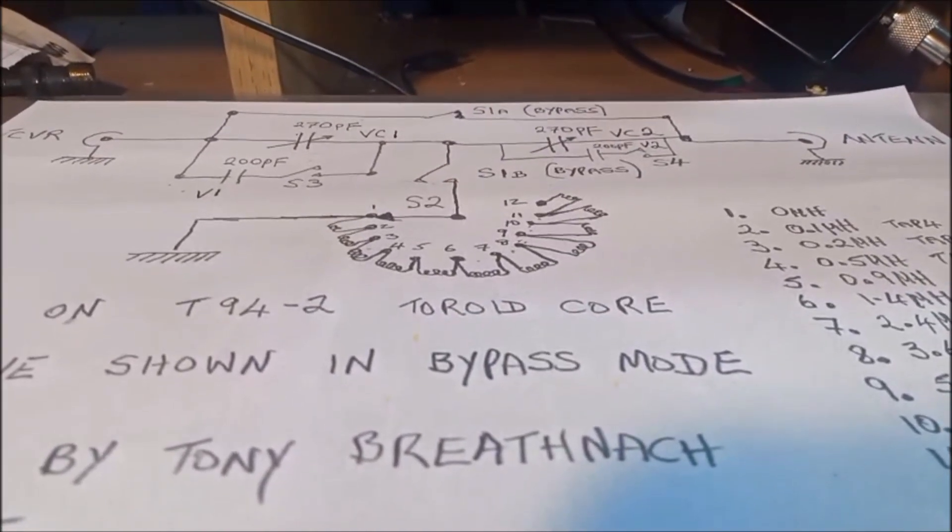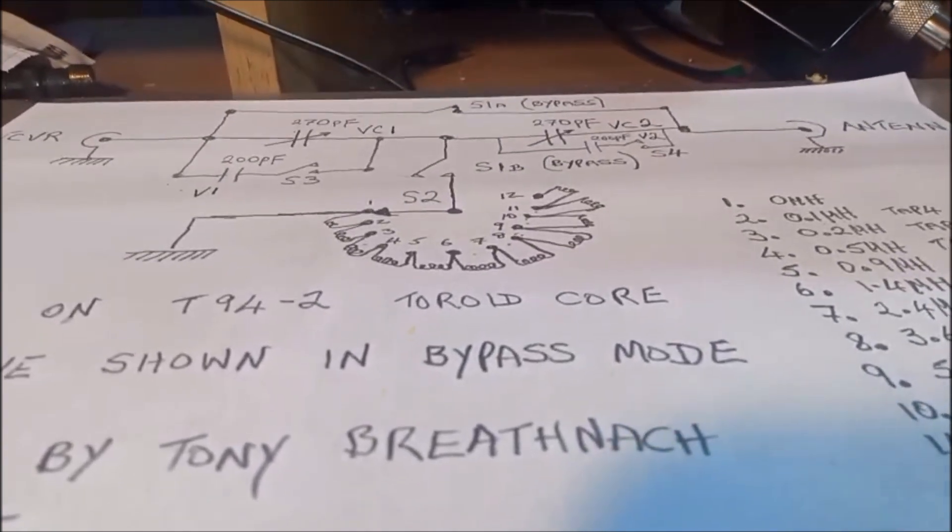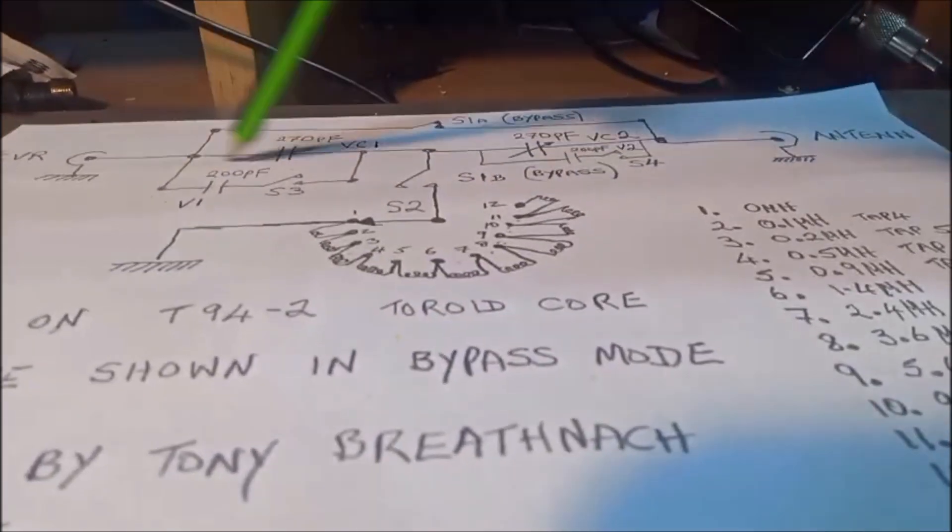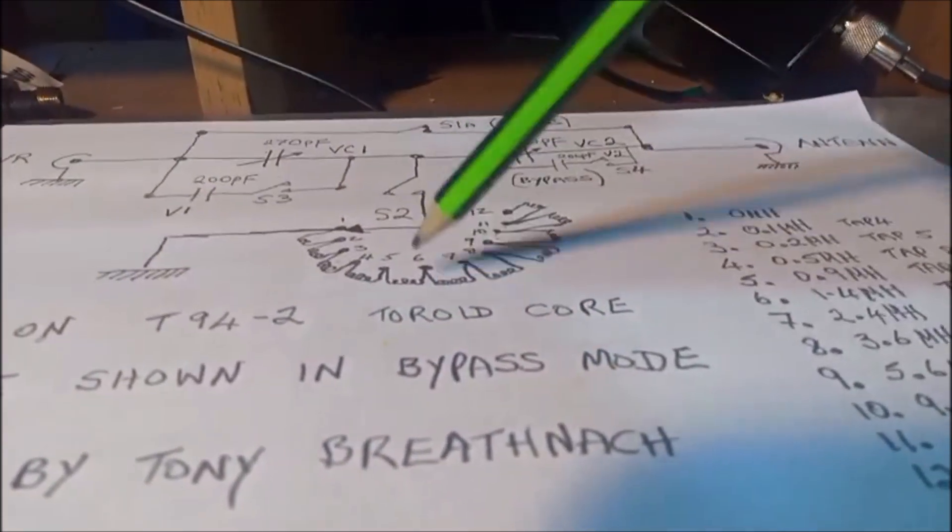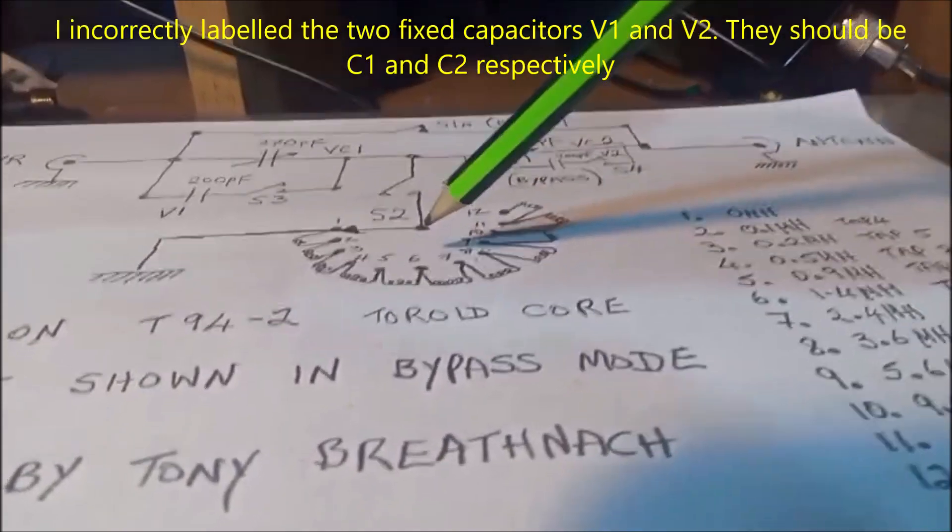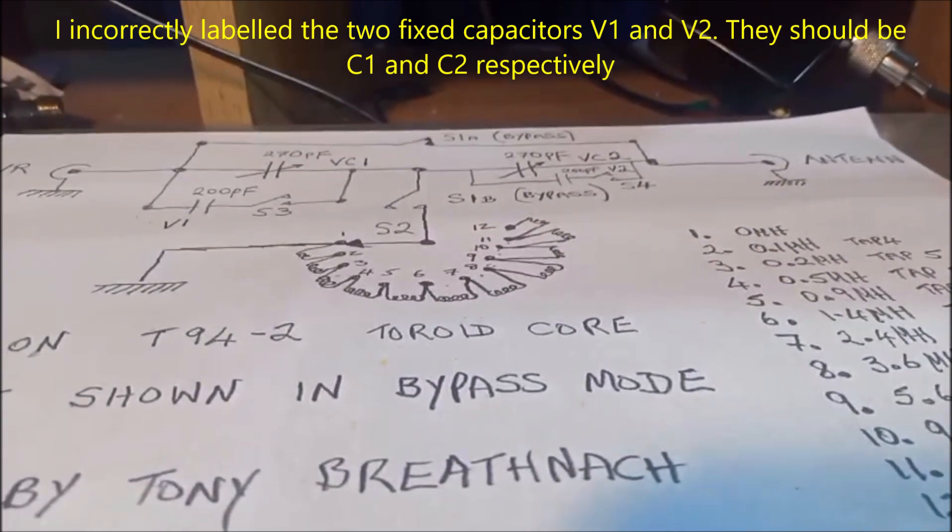I'm going to explain the operation of the TMatch. It's called a TMatch because you've got the horizontal here composed of the capacitors and you've got the vertical part of the T here which is composed of the selection of inductances.